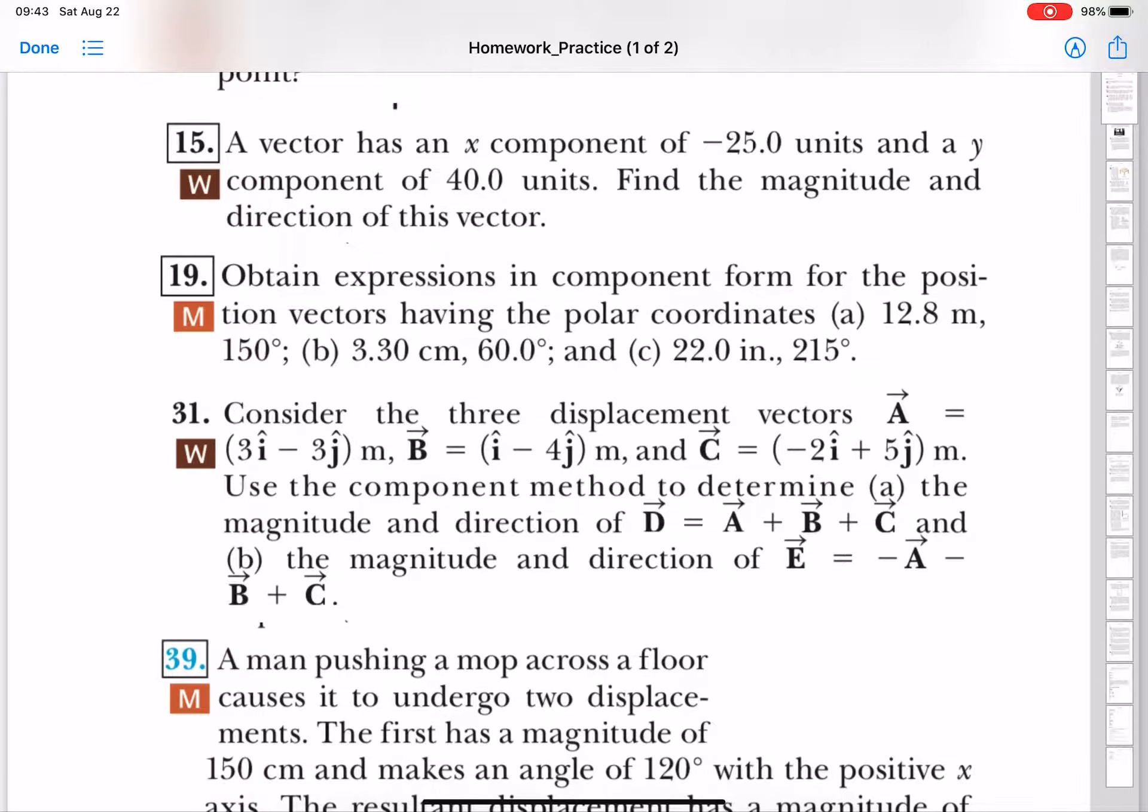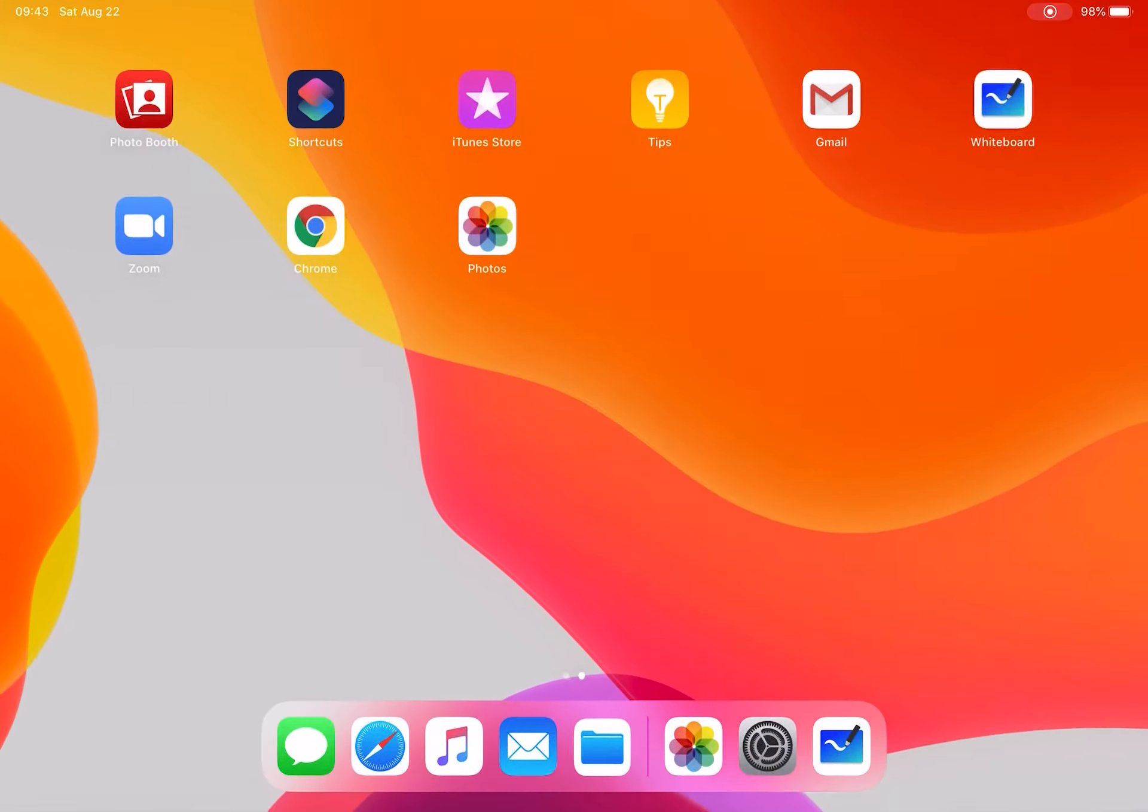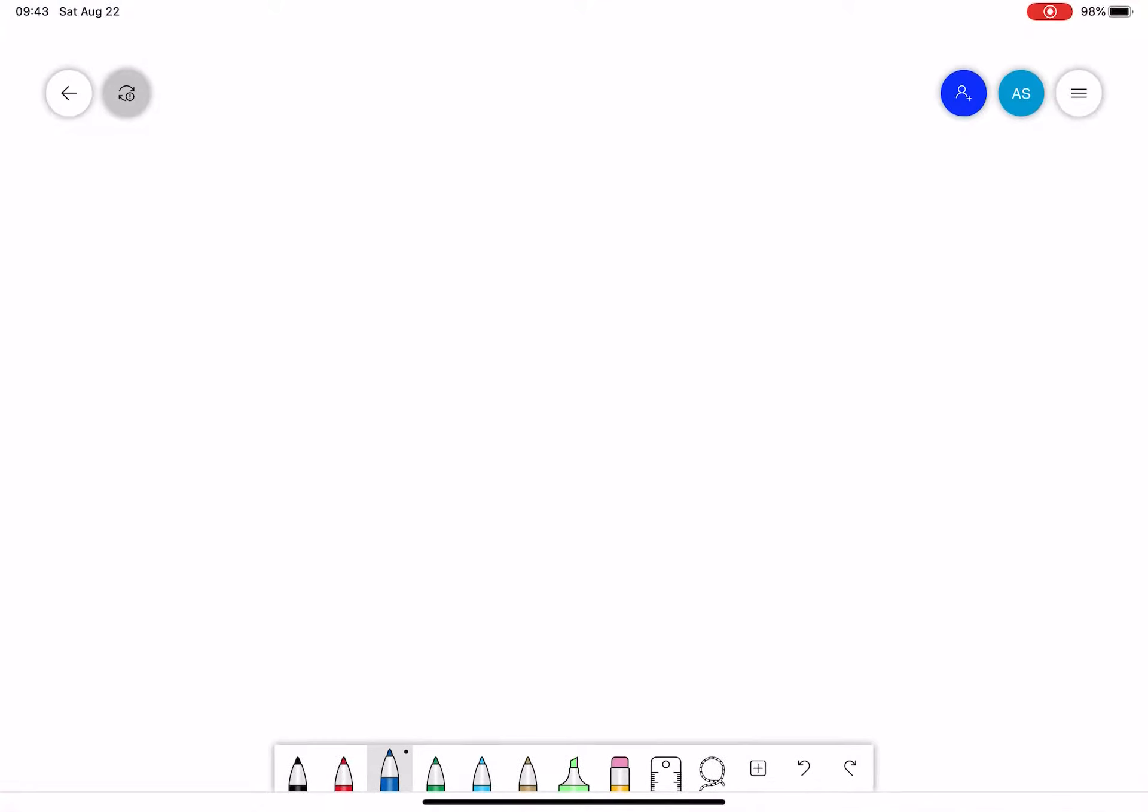The magnitude and direction of D vector, where D equals A vector plus B vector plus C vector. Okay, so let's write down what is given here. First of all...